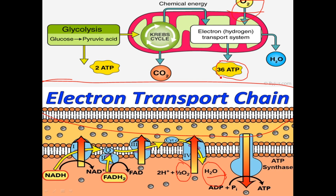If there is no oxygen in the cells, it leads to anaerobic respiration and lactic acid accumulation. Anaerobic respiration produces only two ATP, which is much less energy than aerobic respiration.